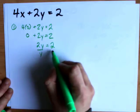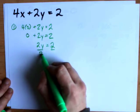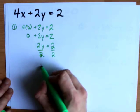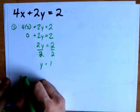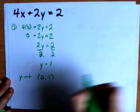And then to isolate for y, I divide both sides by 2. 2y over 2 is y, and 2 over 2 is 1. So that means that my y-intercept here is (0, 1).